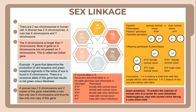Most of the genes on the X chromosome are not present on the Y chromosome, and this is called sex-linked genes. The example given here is that the gene determining the production of red-receptive and green-receptive pigments in the retina of the eyes is found on the X chromosome. A man has only one X chromosome, and thus he has only one copy of this gene.